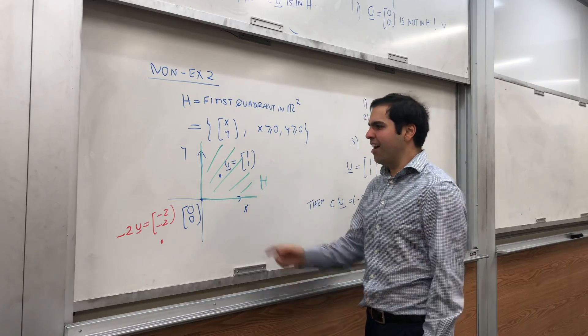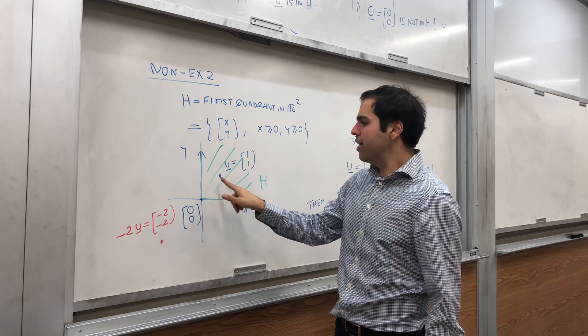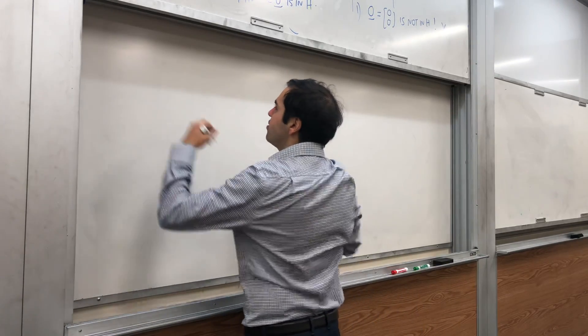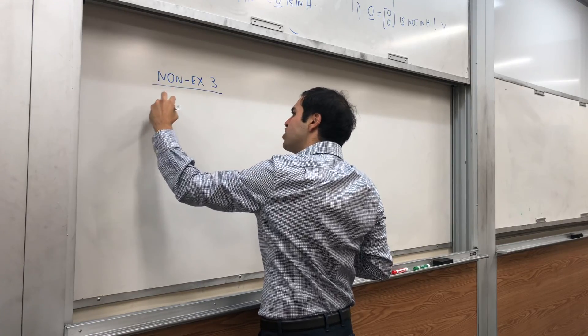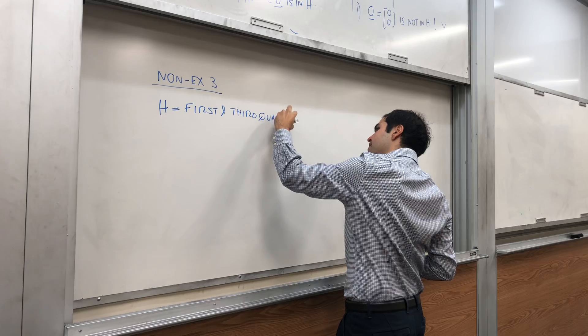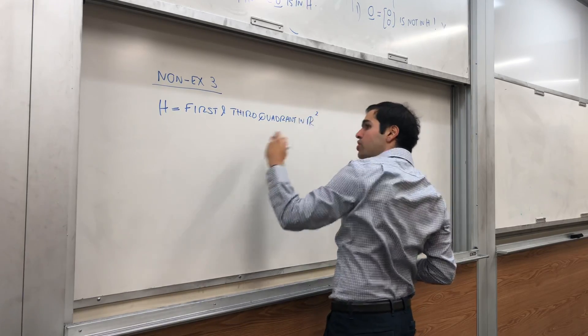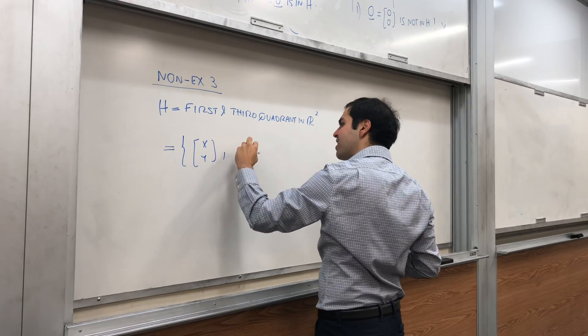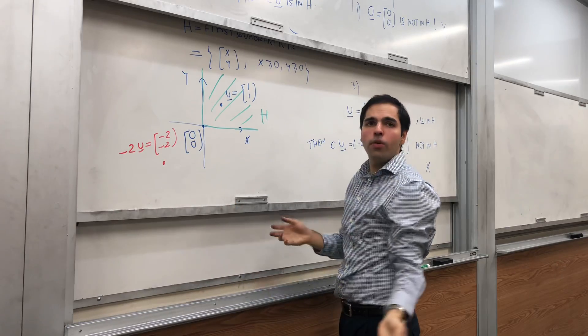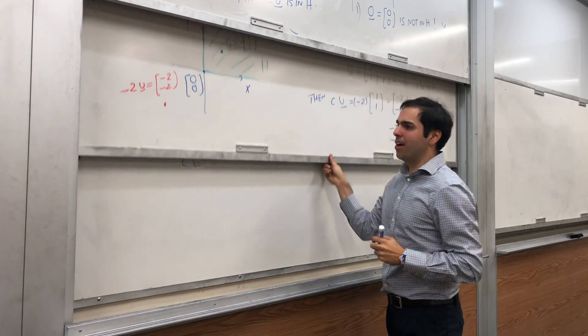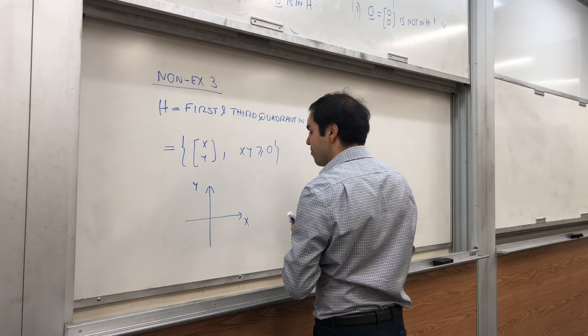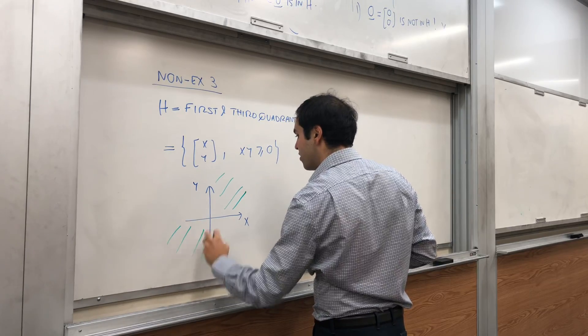Okay, you might be like, fine, the only obstruction here is simply that points might move to the third quadrant. Well, what if we include the third quadrant? So, non-example three, let H be the first and third quadrant in R^2, which we can write nicely as the set of (x, y) such that xy is greater or equal to zero. Because, notice here, in the third quadrant, both components are negative, so if you multiply them, we become positive. And again, let me draw a nice picture. This is R^2, x and y, and then, it's the first quadrant and the third quadrant. This is H.